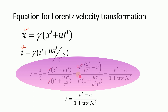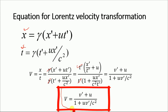The t′ terms cancel, and since displacement divided by time equals velocity, x′/t′ = v′. We arrive at the Lorentz velocity transformation equation: v = (v′ + u) / (1 + uv′/c²). We now have this new equation for velocity transformation, which we will use to determine the velocity of the missile fired from the spaceship.